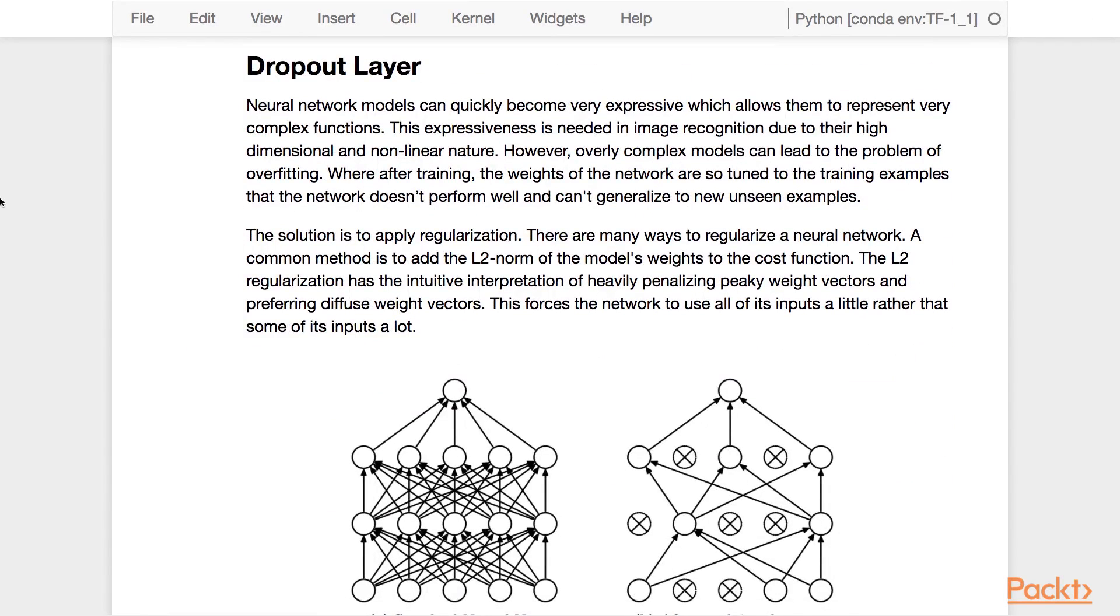Neural networks can quickly become very expressive, which allows them to represent very complex functions. This expressiveness is needed in image recognition due to their high-dimensional and non-linear nature. However, overly complex models can lead to the problem of overfitting, where after training, the weights of the network are so tuned to training examples that the network doesn't perform well and can't generalize to new, unseen examples. The solution is to apply regularization.